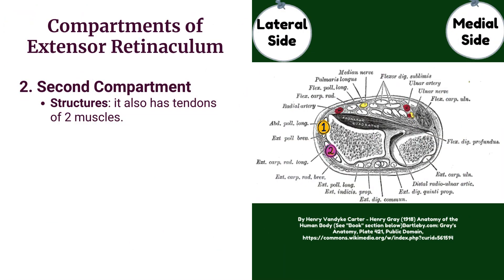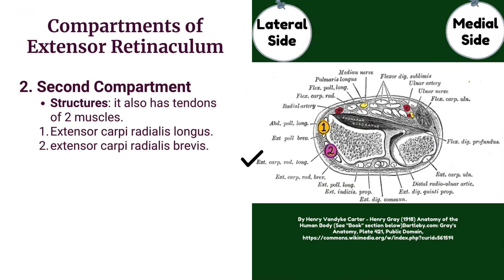The second compartment also contains the tendons of two muscles: extensor carpi radialis longus and extensor carpi radialis brevis.